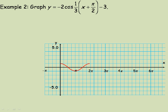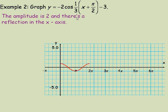Moving to the example on page 2, we're graphing a cosine function. The −2 in front means the amplitude is 2 and the negative means there is a reflection in the x-axis. So instead of the usual cosine shape, it'll start, go up to a peak, then come down — upside down compared to the regular cosine graph.